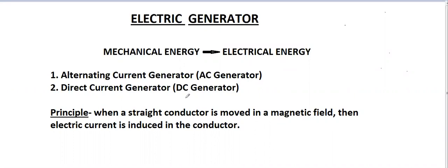An electric generator works on the principle of electromagnetic induction. That means when a straight conductor is moved in a magnetic field, an electric current is induced in the conductor. In an electric generator, a coil is moved in a magnetic field, so a current is induced.